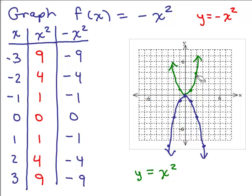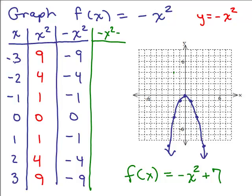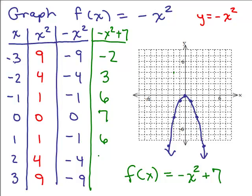Now let's graph f(x) = -x² + 7. All the y values will be whatever -x² is, plus 7 more. Adding 7 to each y value from the previous table gives us: 3, 6, 7, 6, 3, and the outer ones become negative 2. The corrected y values are positive 3, positive 6, 7, 6, 3, and negative 2.